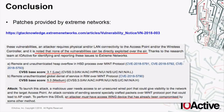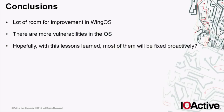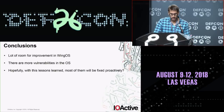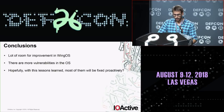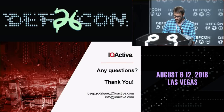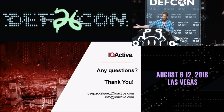We recently spoke with them and they realized it was wrong — they changed the information and are now accepting that the vulnerabilities can be exploited over the air and the attacker doesn't need to compromise a device to exploit the MINT issues. Finally, I think there is a lot of room for improvement in this operating system because there are more vulnerabilities in this OS. Hopefully with these lessons learned they will fix more issues proactively and we will have more secure Wing OS devices out there. Thank you very much and if you have any questions, I'll be around here.